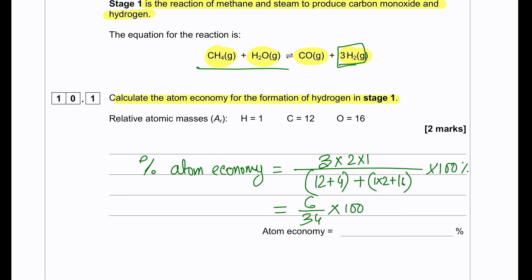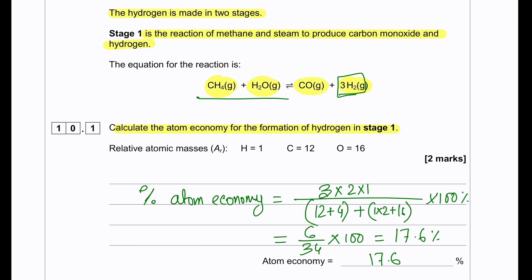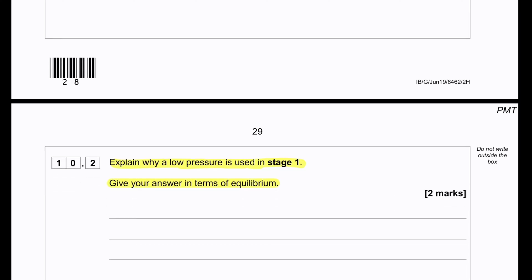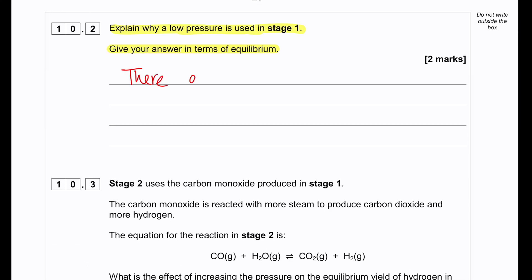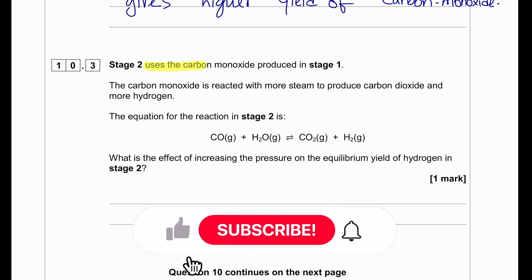Explain why a low pressure is used in stage 1. Give your answer in terms of equilibrium. When we look into the equation, we see that there are two moles on the reactant side and four moles on the product side. Our answer will be: because there are fewer moles of molecules on the left-hand side and more number of molecules on the right-hand side, there is a higher yield of hydrogen and carbon monoxide naturally, so low pressure is used in the system.